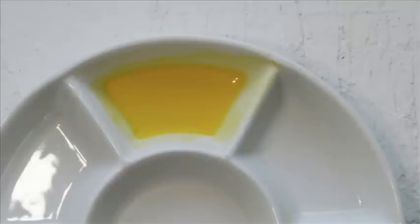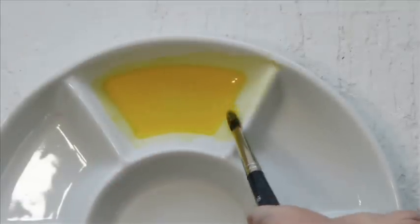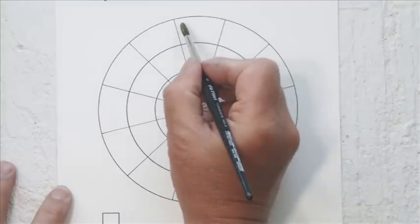Mix them to a reasonable consistency so they provide a strong colour. We'll start with the yellow and paint it in the 12 o'clock position on the colour wheel.